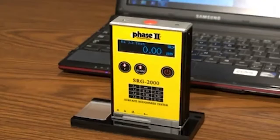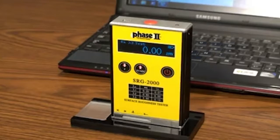This is an instructional video detailing the applications and functions of the Phase 2 SRG2000 surface roughness tester. The SRG2000 is an instrument designed to check surface finish with measured values displayed on a digital readout in various surface roughness parameters.